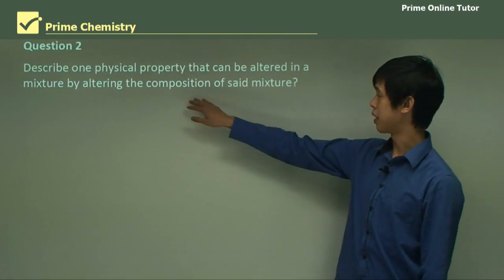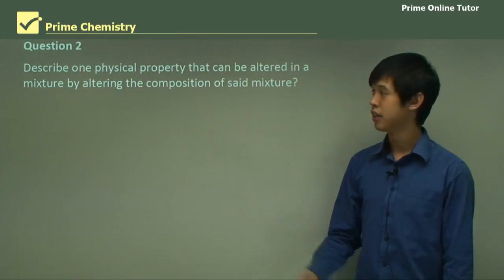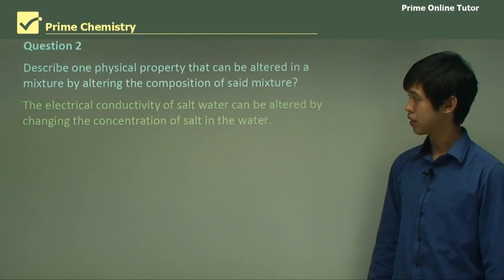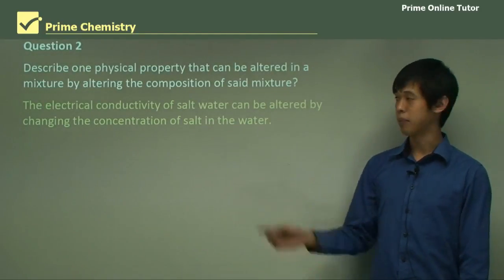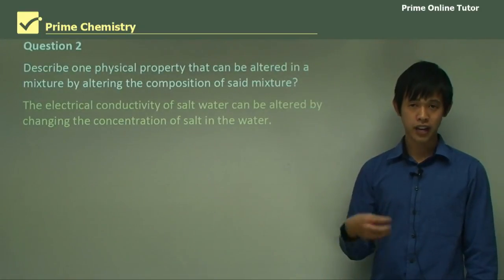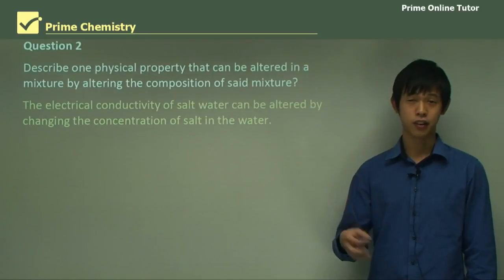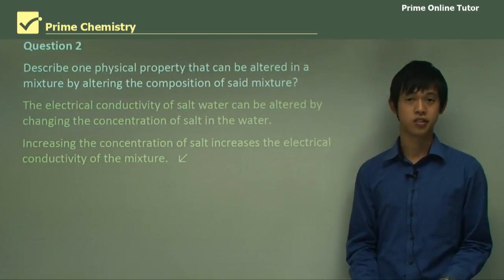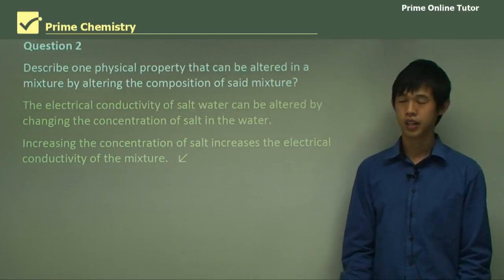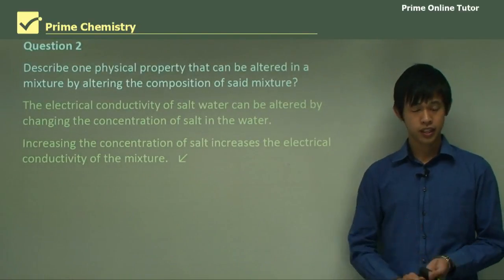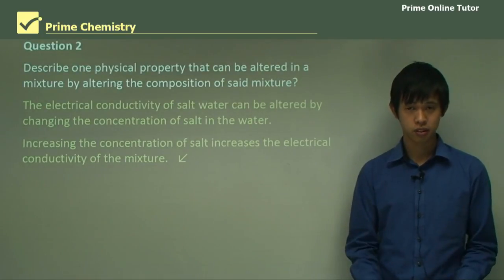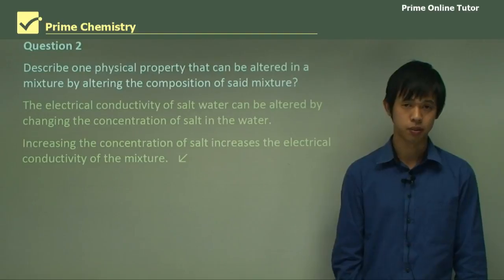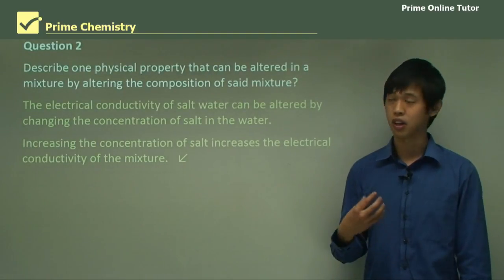Describe one physical property that can be altered in a mixture by altering its composition. The electrical conductivity of salt water can be altered by changing the concentration of salt: if you have a lot of salt in the water, it will be more conductive than with very little salt. Increasing the concentration of salt increases conductivity, and decreasing it decreases conductivity. Another example is steel: adding more carbon makes it more brittle, while taking away carbon makes it more malleable.